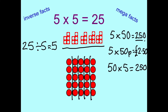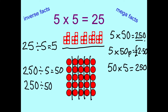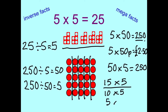Let's do the other inverse first. So 250 divided into 5s equals 50. 250 divided into 50s equals 5. Let's try 15 times 5. Now remember we're going to partition the 15. So we're going to do 10 times 5, then we're going to do 5 times 5, and you've got to add those two together. So 10 fives we should know are 50, and we know 5 fives are 25. See if you can add those together to get 15 times 5.